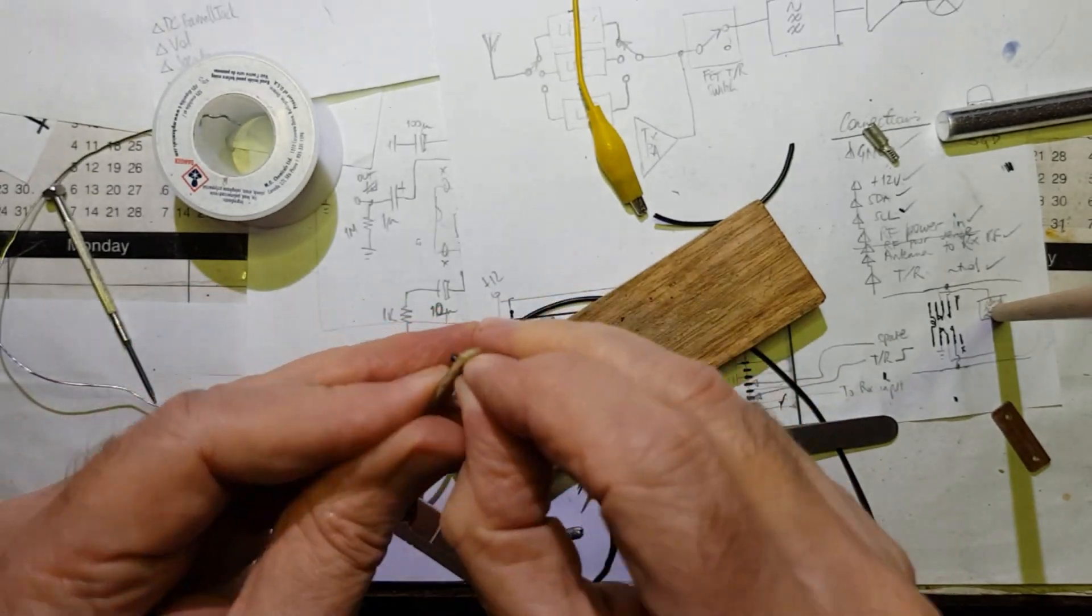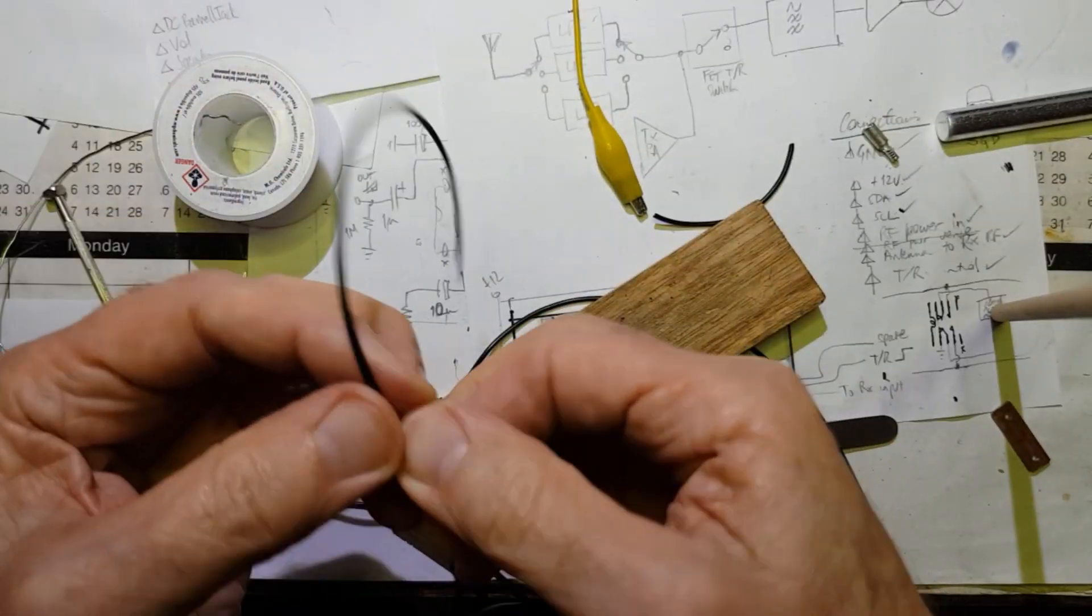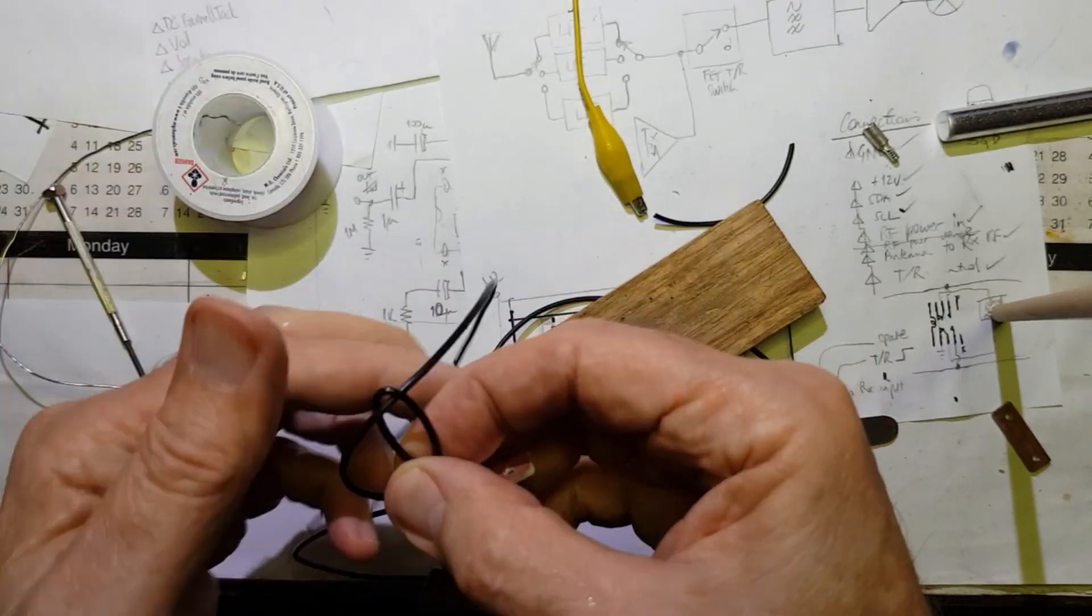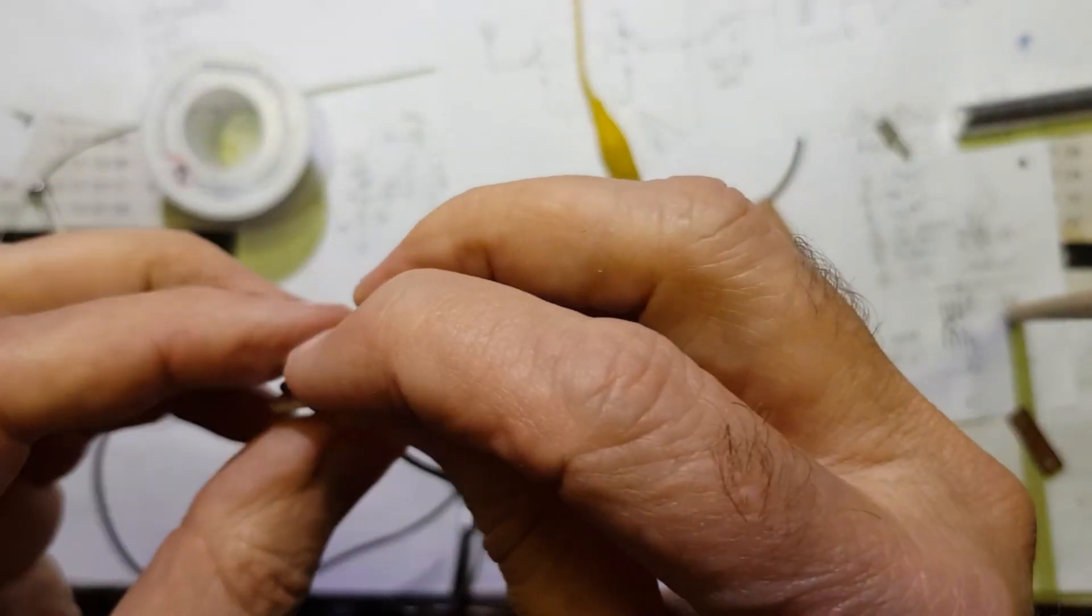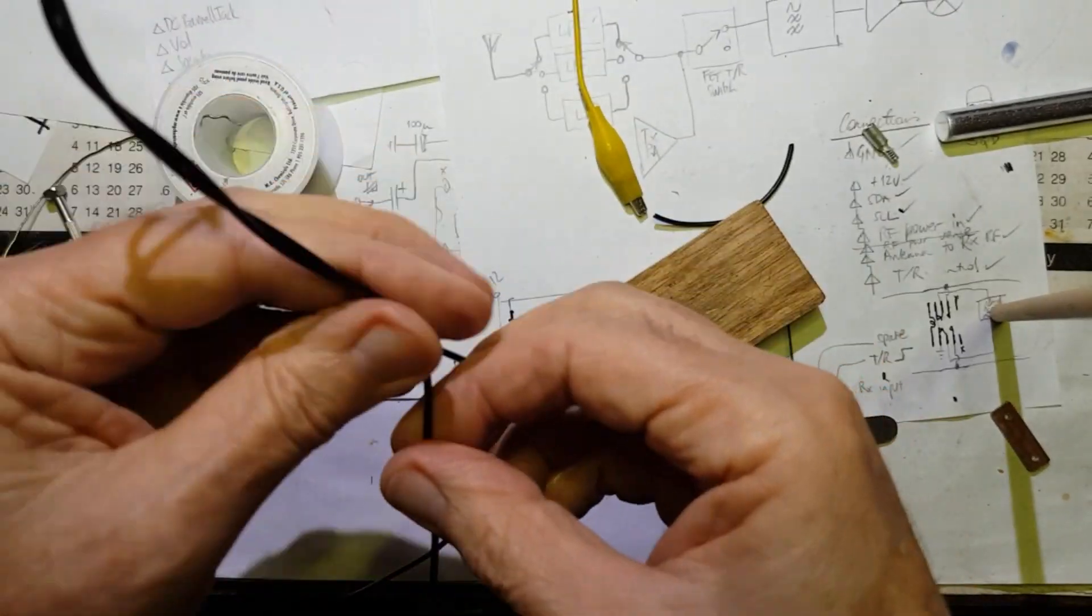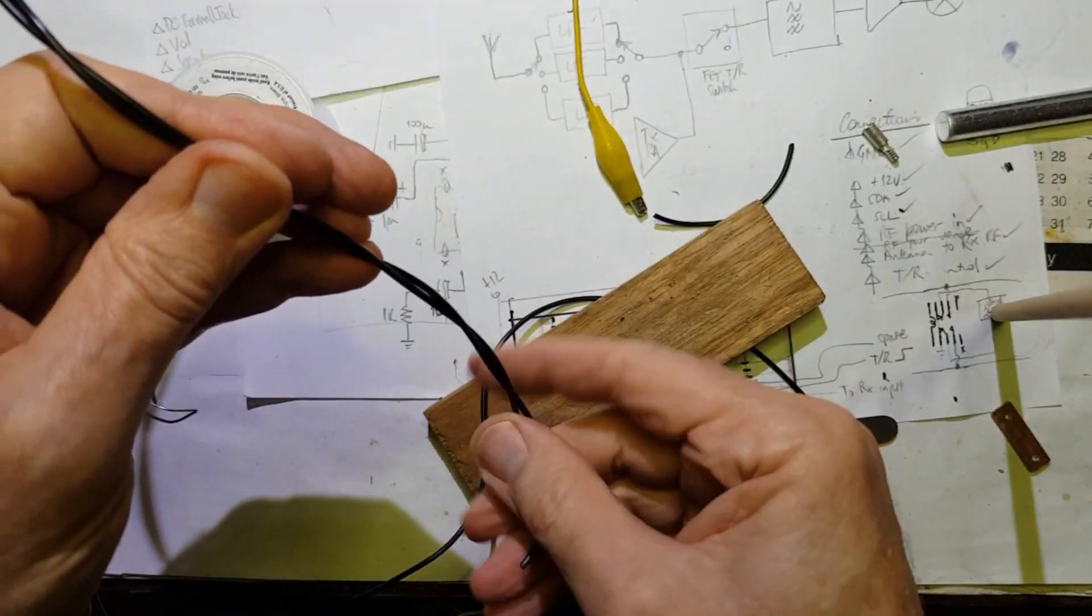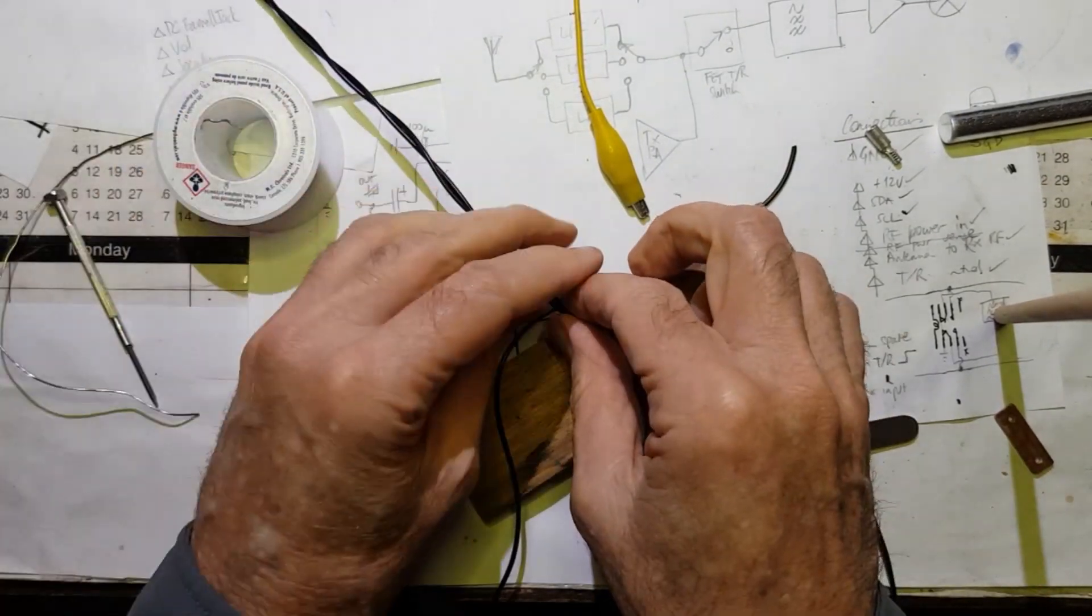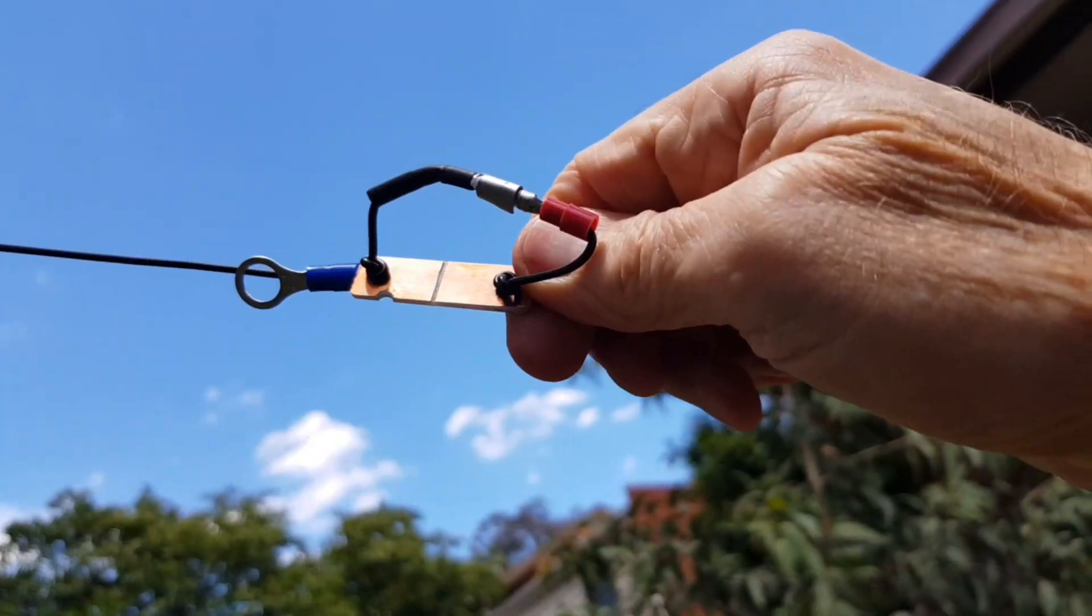Now add the two 40 meter, 5.1 meter lengths on the outside of the link. The end insulator is another scrap of printed circuit board. And here I'm just doubling about 15 centimeters of wire back on itself in case I need to lengthen it to bring its resonance down.